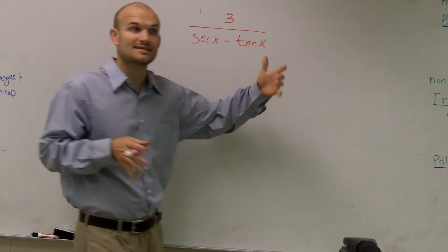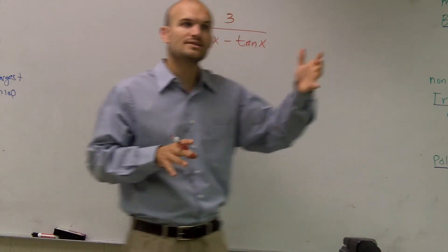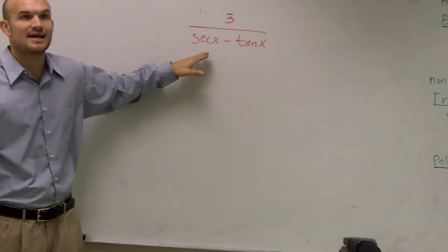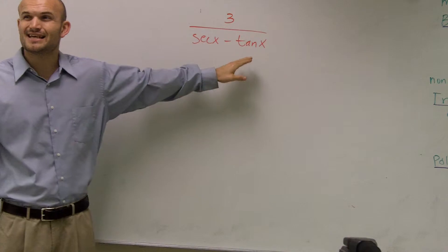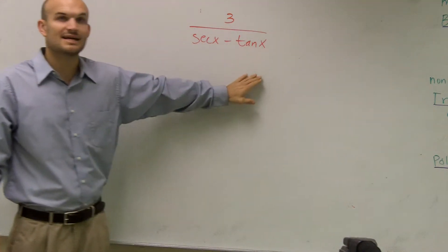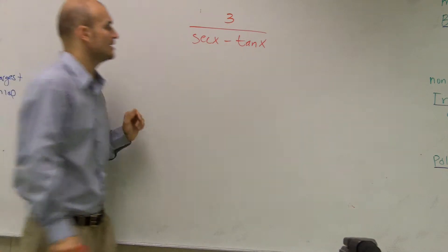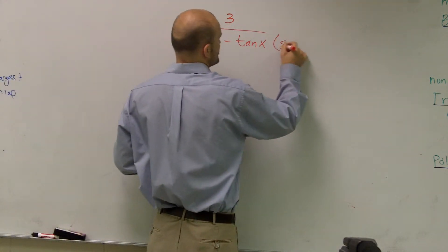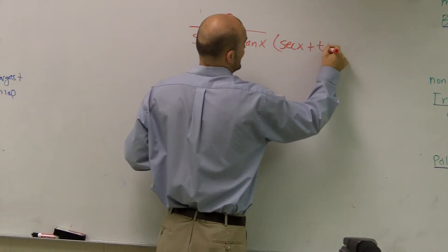So what is a way for me to take secx and tanx and convert them to my Pythagorean identities? Well, what I can do to make these squared, if I multiply by my conjugate, which is secx plus tanx.